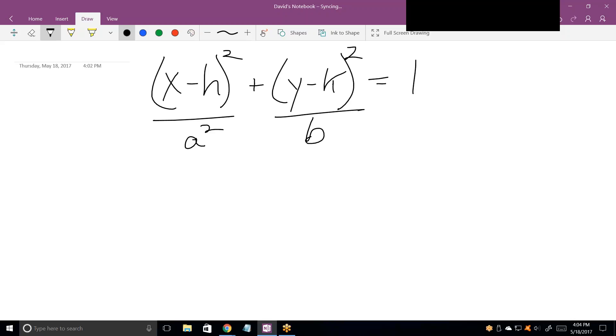I'm surprised at that, actually. There's only four conic sections: parabolas, ellipses, circles, and hyperbolas. And each one has its own general formula. What I just wrote there was the general formula for a horizontal ellipse.